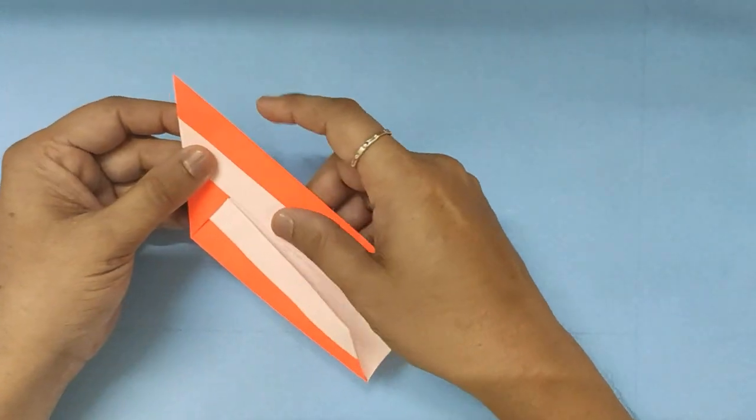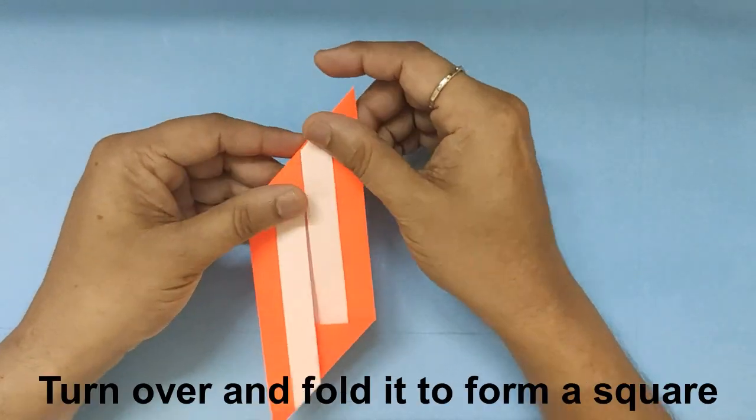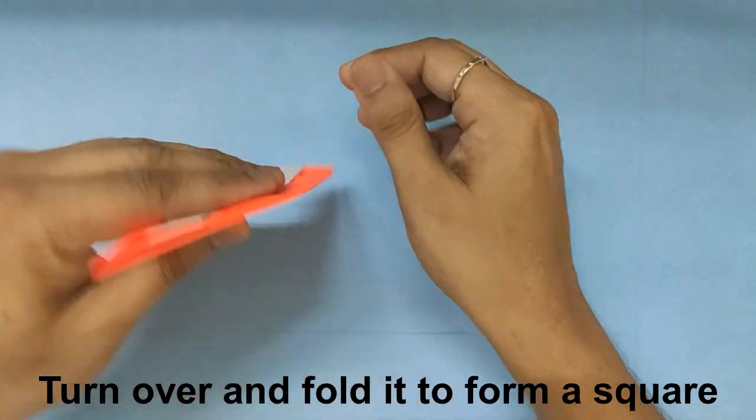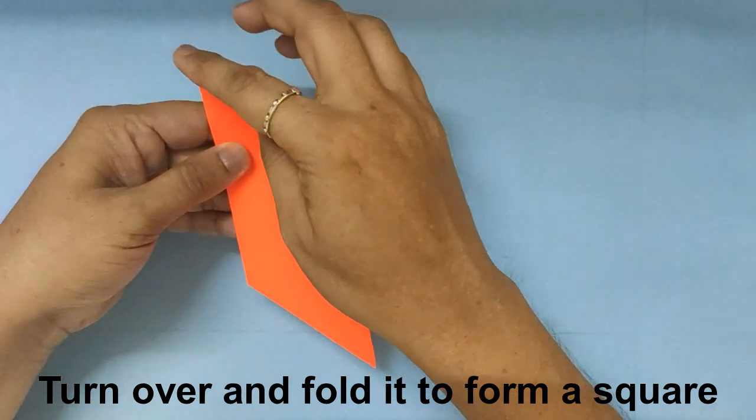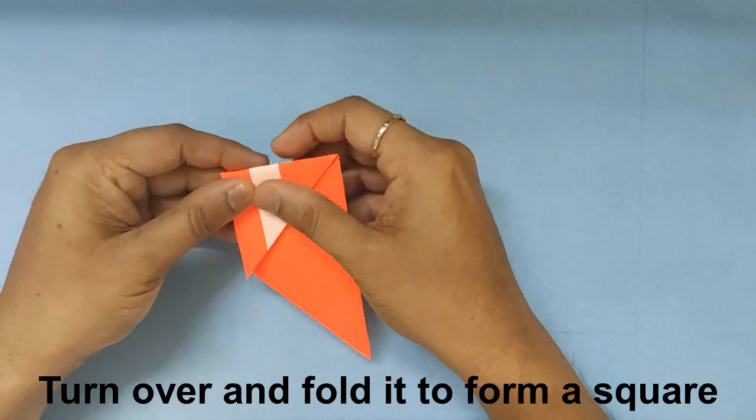Fold the big triangle inside, and the big triangle on the other side goes inside. Same like the cube we made in the beginning. Turn it over and make a square.